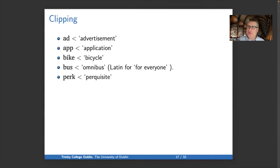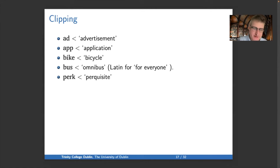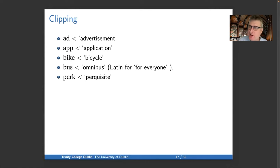Clipping is when you take a long word and chop part of it off. Usually there's no semantic change at first, but a semantic change can happen. 'Ad' comes from advertisement. 'App' comes from application — notably, we still say 'college application' but not 'college app'; an app has become specialized to mean a computer, web, or phone application. 'Bike' is from bicycle. 'Bus' is from omnibus — a strange word, since bus is actually just a Latin dative plural ending; omnibus means 'for everyone.' And 'perk,' as in 'the perks of the job,' comes from perquisite.